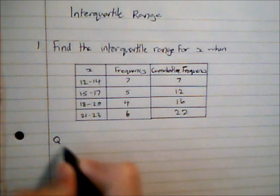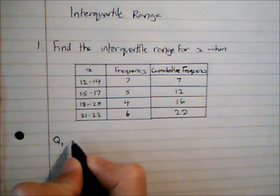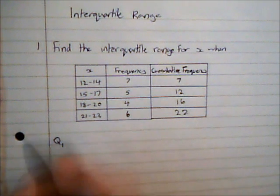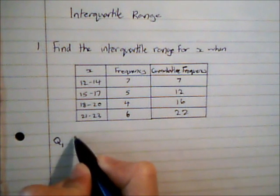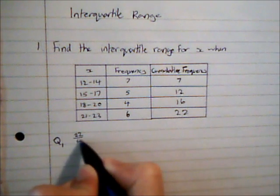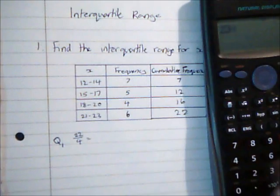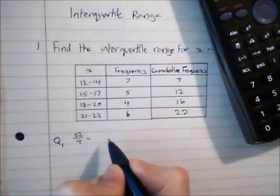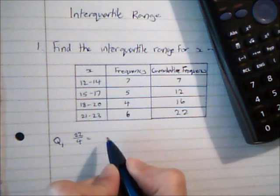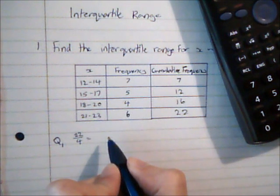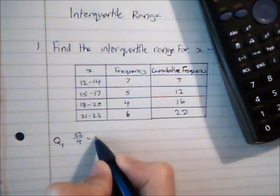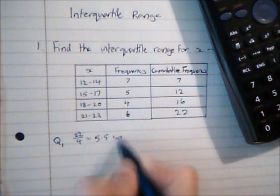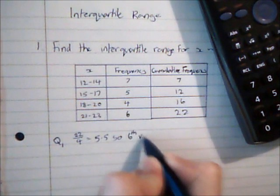So Q1, which is the first quartile, is going to be a quarter of the way through the data. So I'm going to do 22 divided by 4, which gives me 5.5. And by convention, what we're going to do is round up to the nearest whole number when we haven't got a whole number in the first place. So 5.5 indicates that it's the sixth value that we're interested in.